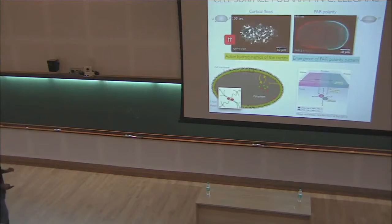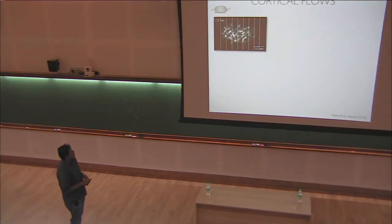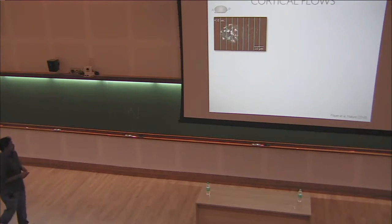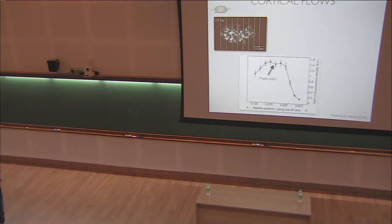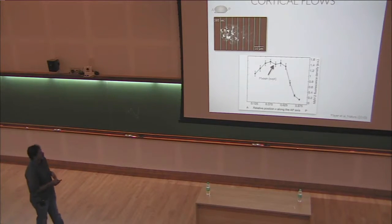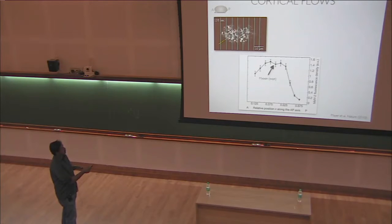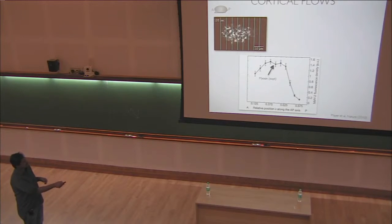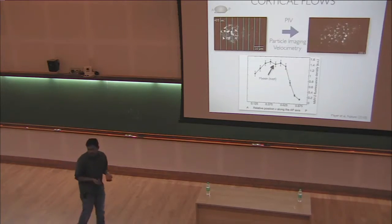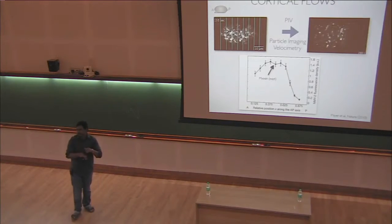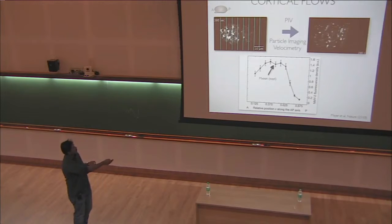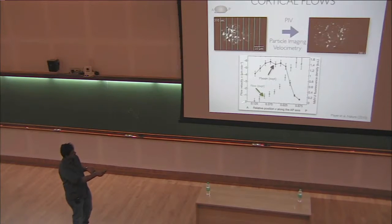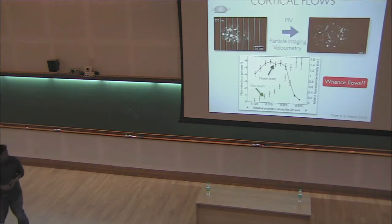To understand the flows, what was done in Stephan Bril's group several years ago was the following: you look at these flows, segment the images, and over a certain period of time look at the profile of myosin experimentally. At the same time, you do particle imaging velocimetry — looking at cross-correlation between successive frames to get the velocity field — segment it properly, and you see a consistent flow from right to left, along with a distribution of myosin. We want to understand where these flows are coming from.